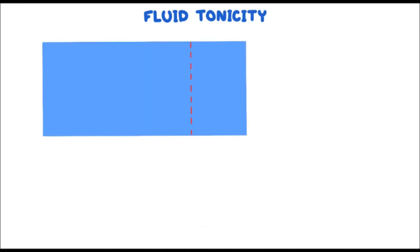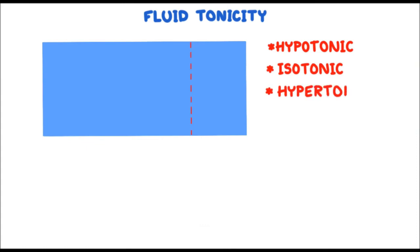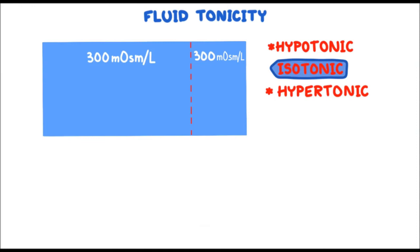Now let's talk about body fluid tonicity. Three terms — hypotonic, isotonic, and hypertonic — are used to compare the osmolarity of intracellular fluid to the osmolarity of extracellular fluid. Despite having different compositions, both compartments have an osmolarity of 300 milliosmoles per liter. When two solutions separated by a semi-permeable membrane have the same osmolarity, they are called isotonic. In this case there is no net water diffusion, because the water concentration in both compartments is equal — this is a steady state.